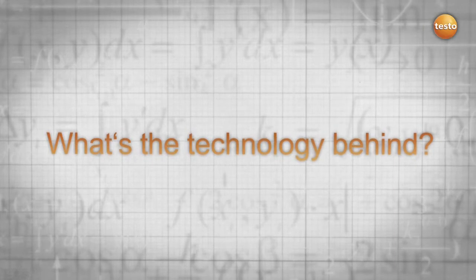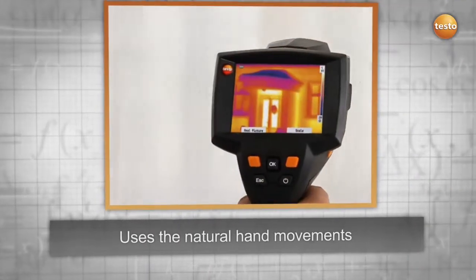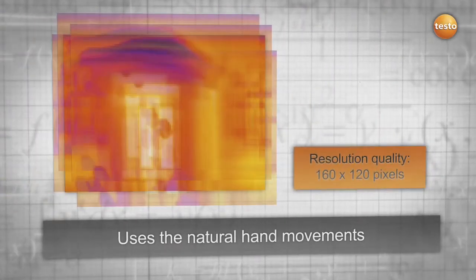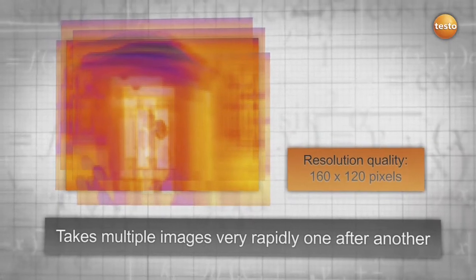The Super Resolution technology uses natural hand movement and takes multiple images rapidly, one after another, which are slightly shifted to each other. Using an algorithm, these images are then calculated to obtain one image. The result?